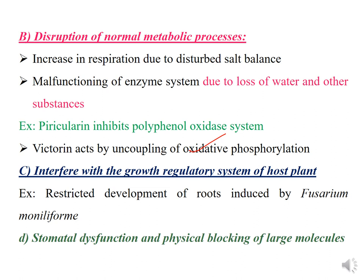Another effect is stomatal dysfunction caused by these toxins, and physical blocking of large molecules required for growth. So there are four ways toxins influence plant growth: altering plasma membrane permeability, disrupting normal metabolic processes, interfering with growth regulatory systems, and causing stomatal dysfunction.